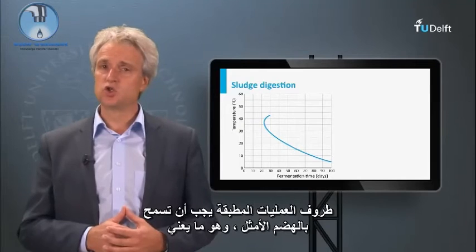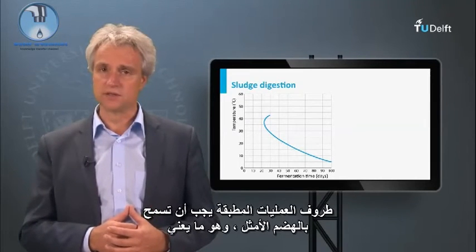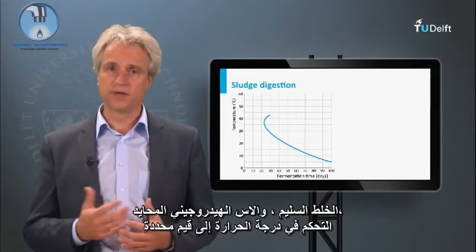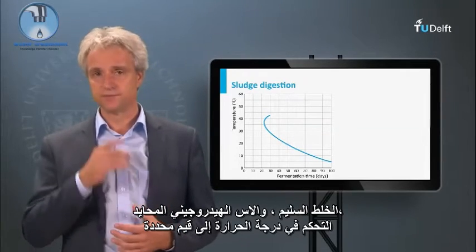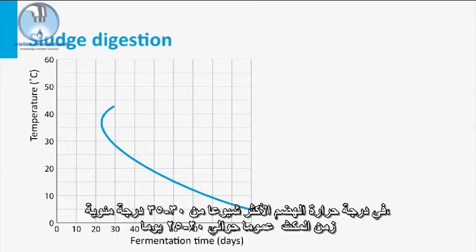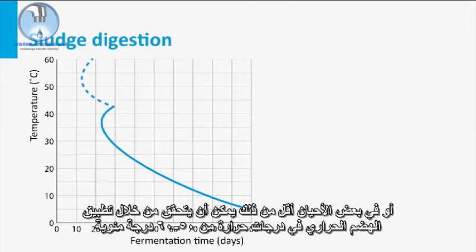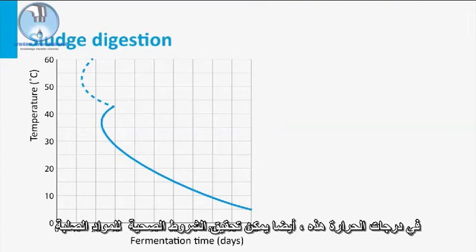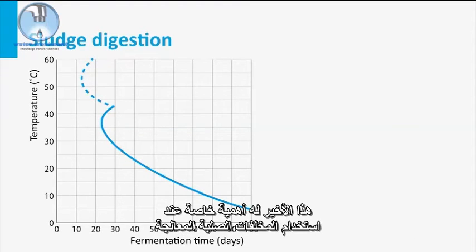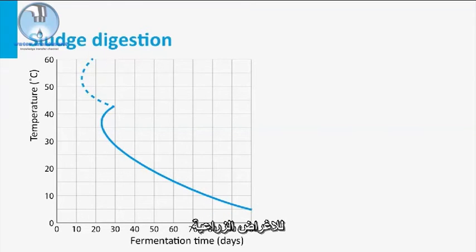The applied process conditions should allow for most optimal digestion, which means proper mixing, neutral pH, and temperature control to set values. At the most common digestion temperature of 30–35 degrees Celsius, the general detention time is about 20–25 days. Shorter detention times, reaching 15 days or sometimes even lower, can be achieved by applying thermophilic digestion at temperatures of 50–60 degrees Celsius. At these temperatures, solids hygienization is also achieved, which is of particular importance when the use of treated biosolids for agricultural purposes is considered.